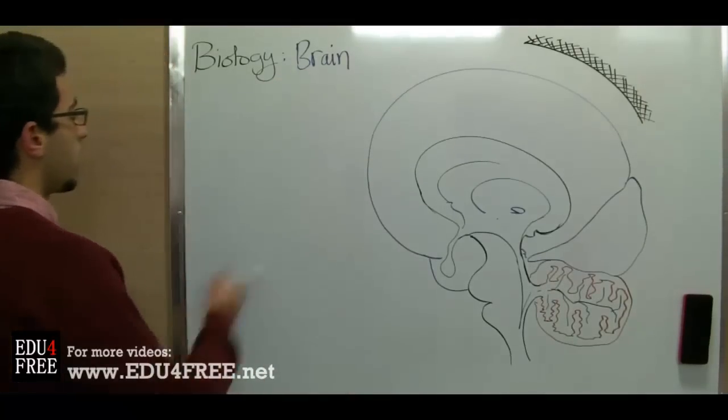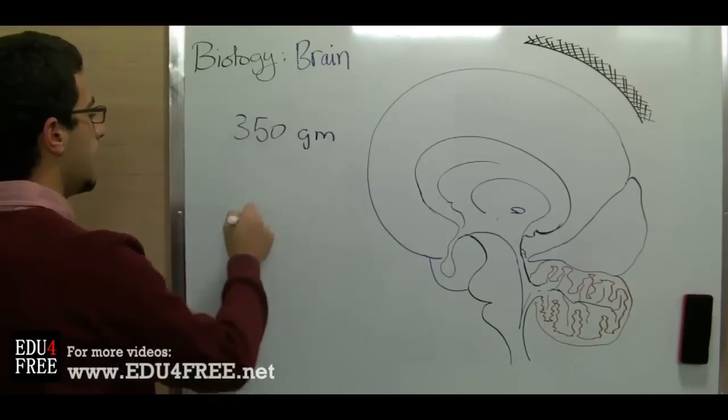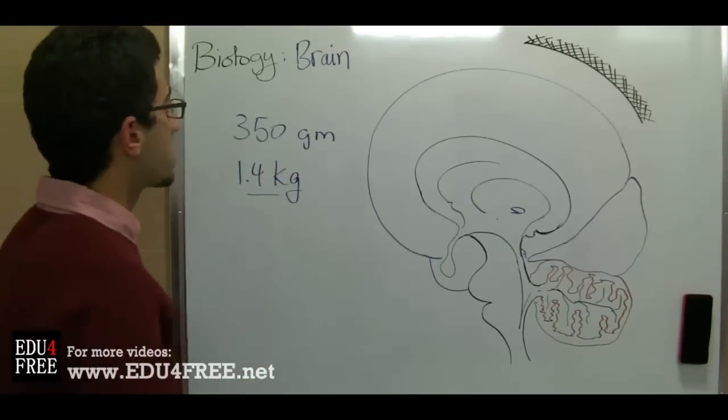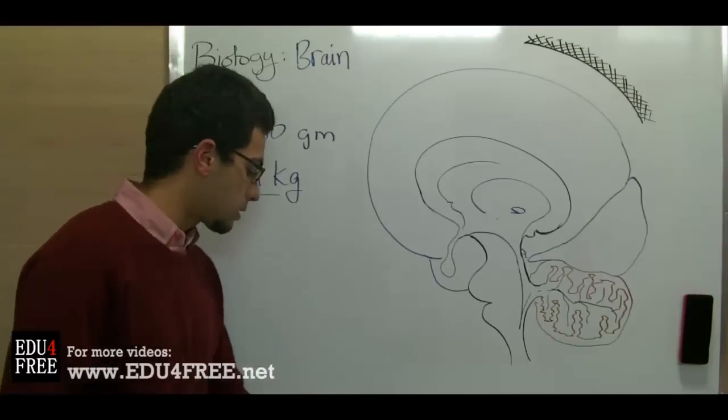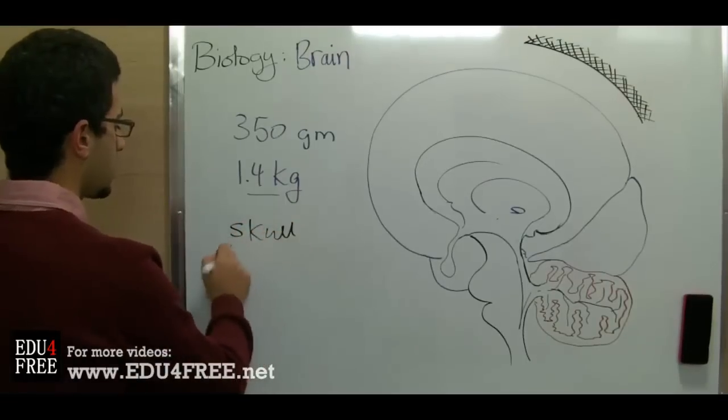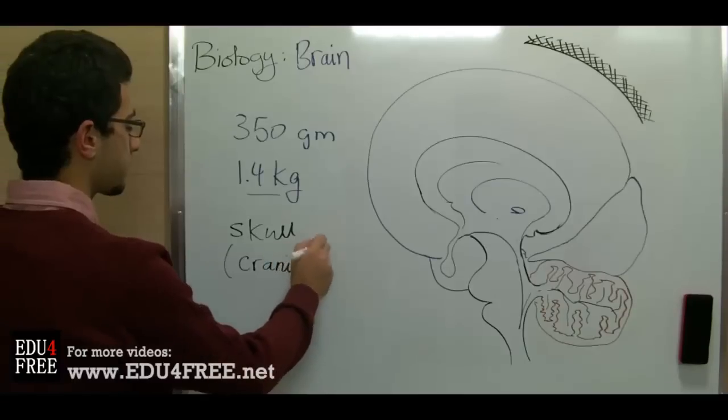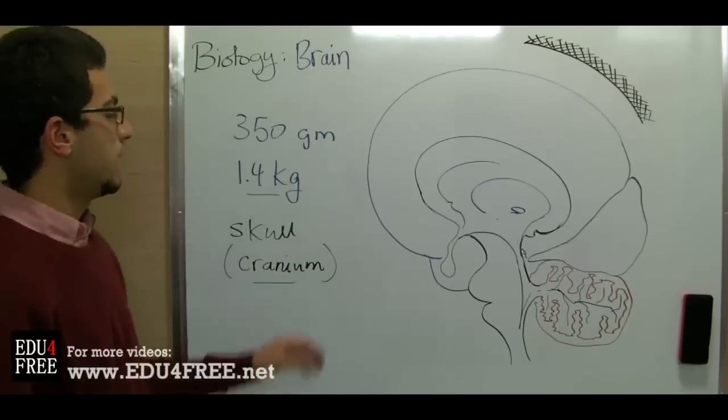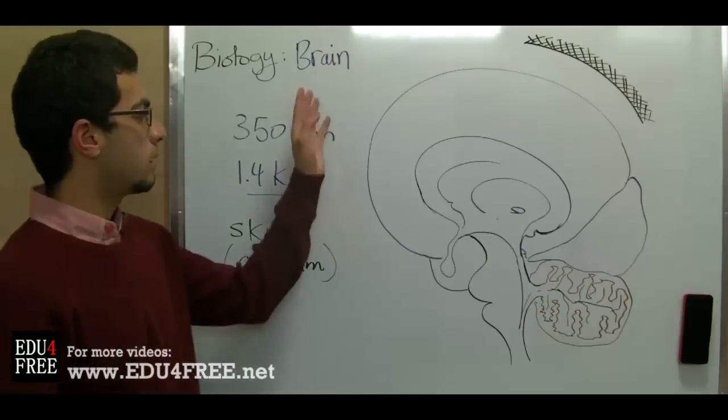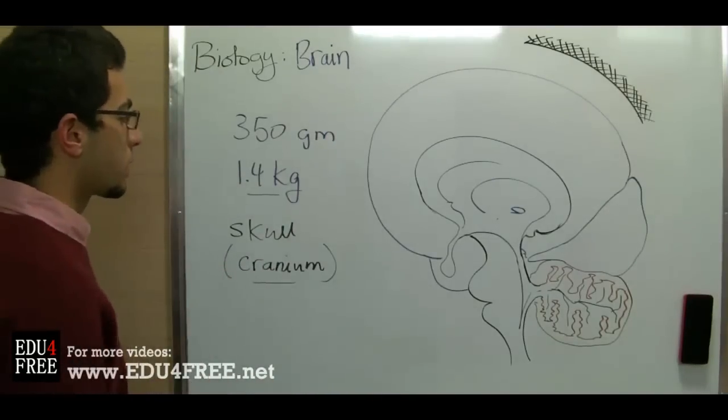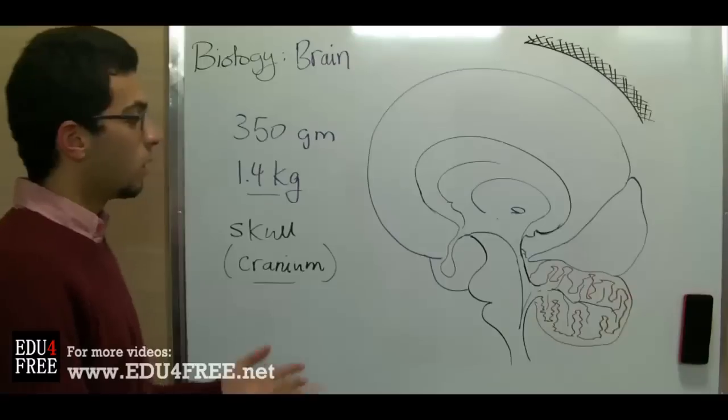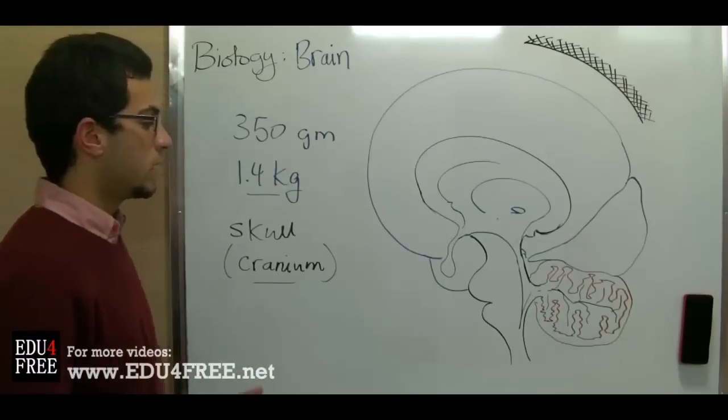The brain weighs about 350 grams at birth and reaches about 1.4 kilograms in adults. The brain is kept in the skull, which also has another name: the cranium. The brain is the major part or the most important part of the central nervous system, as it gives orders which are transmitted to all parts of the body through the spinal cord. It also receives nerve impulses through the spinal cord.